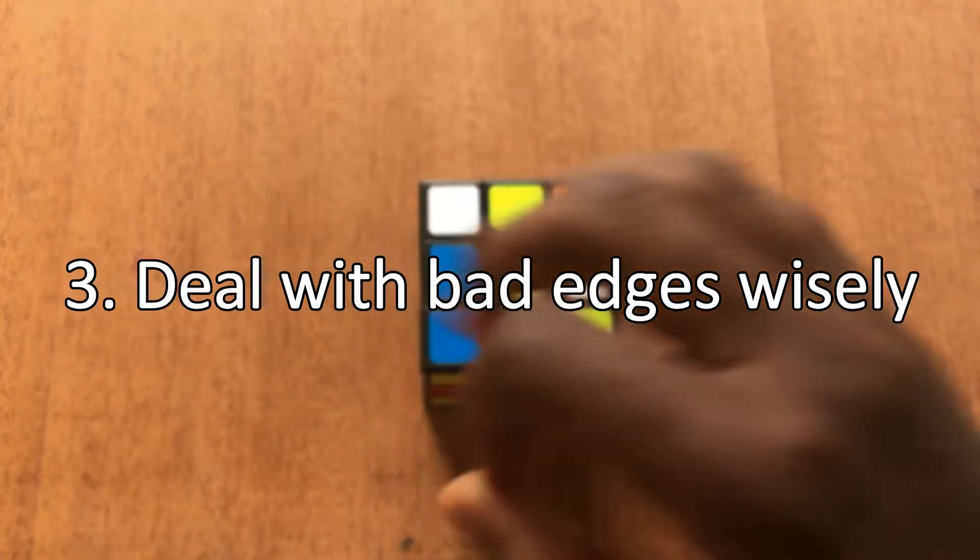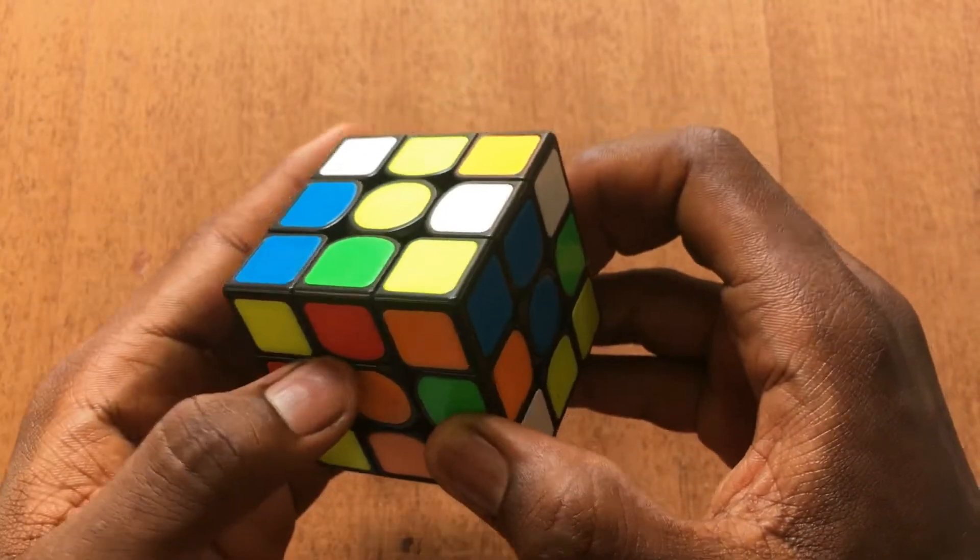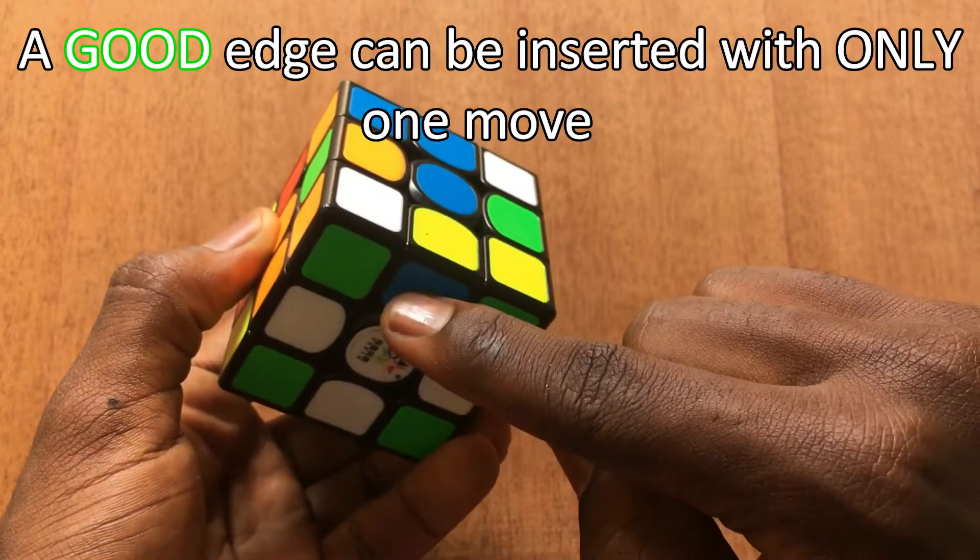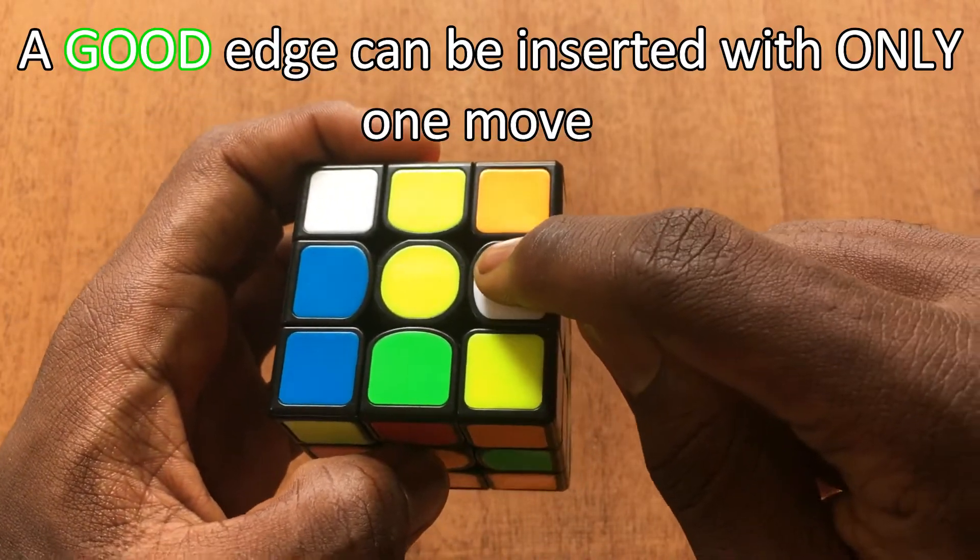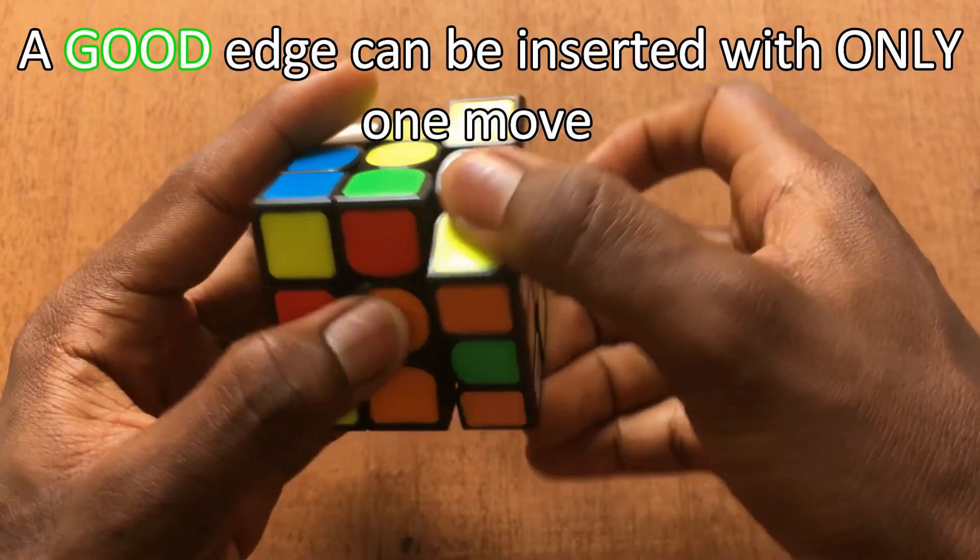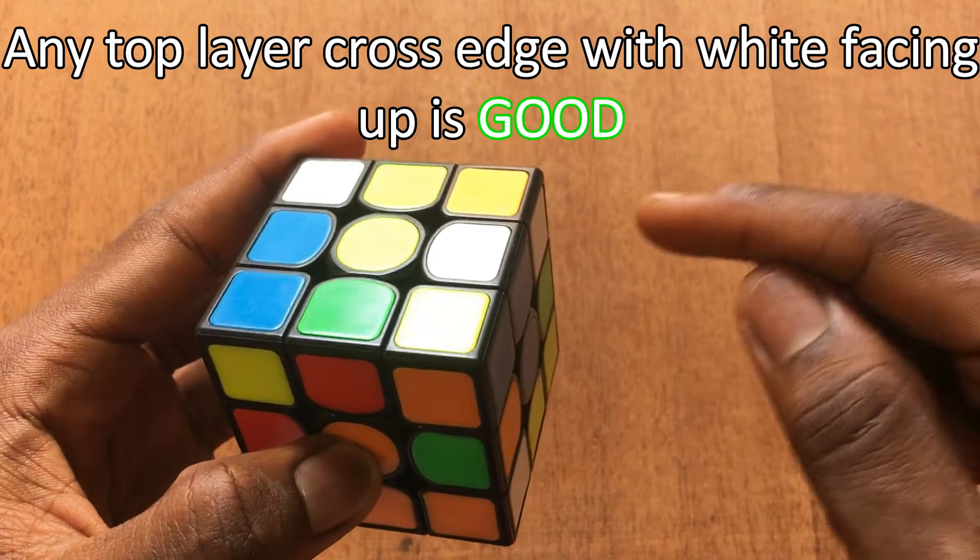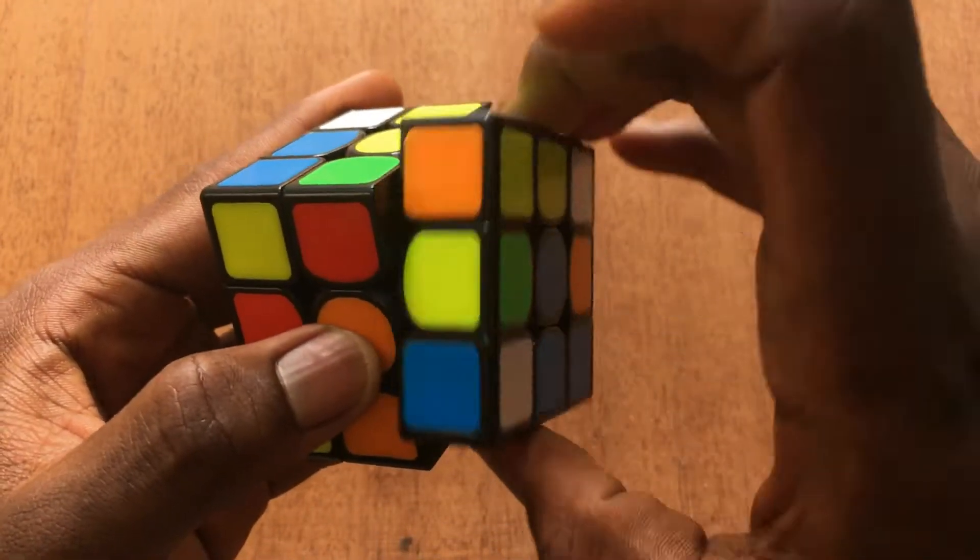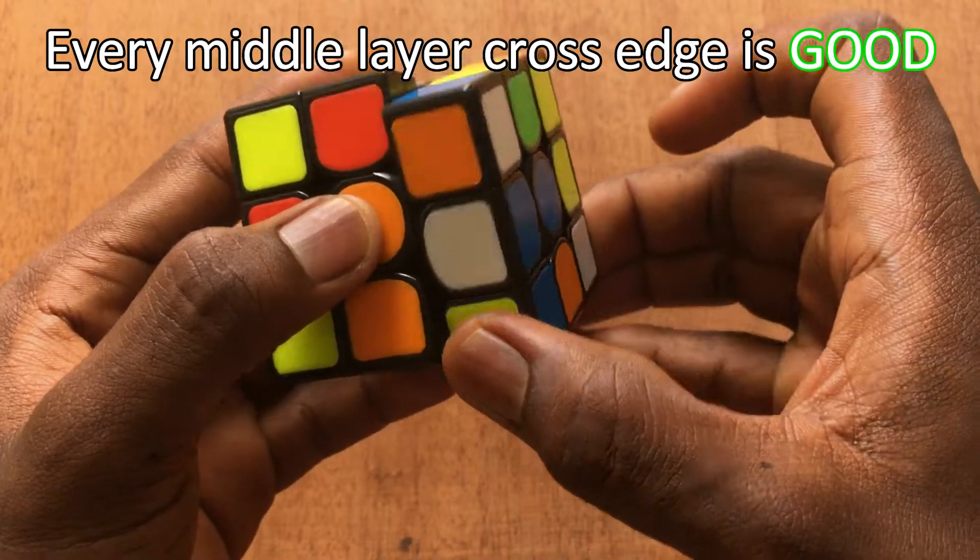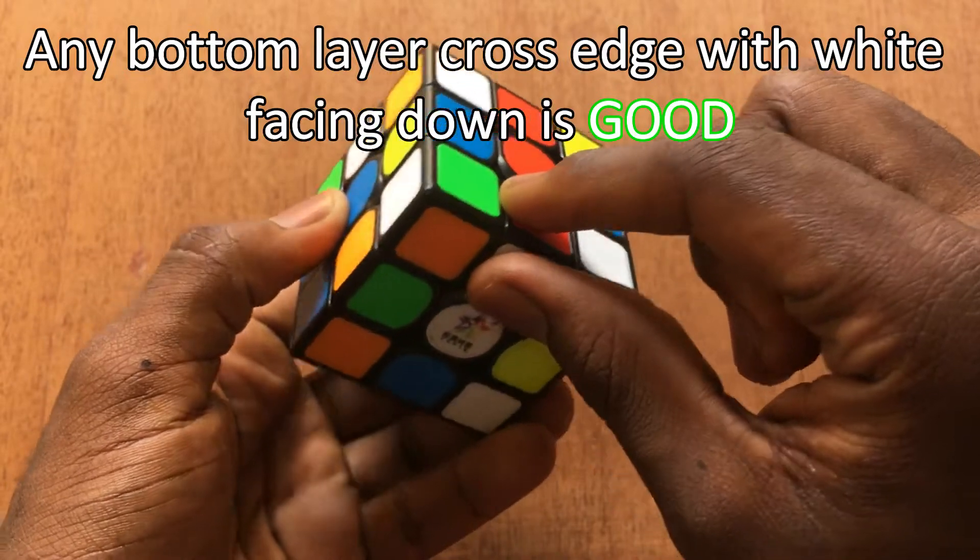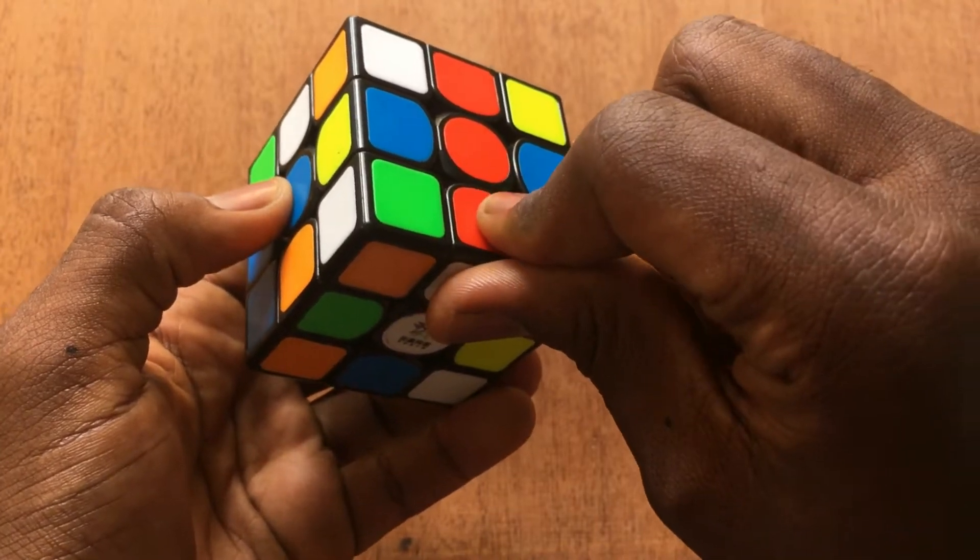Tip number 3: deal with bad edges wisely. It's a common thought to classify our cross edges into two: good edges and bad edges. A good edge is an edge that can be inserted into the bottom layer, that's the cross layer, using only one move. So for example, this is a good edge because I can insert it here using R2 which is one move. Any edge on the top layer with the white sticker facing up is a good edge and can be inserted using one move. Any edge in the middle layer is a good edge and can be inserted using one move. And finally, any edge in the bottom layer with the white sticker facing down is a good edge.